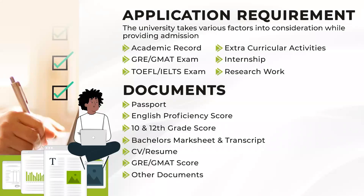For an MBA program, certain universities have an accelerated option with a duration of one year, which cuts down living expense, though tuition fees mostly remain the same. Most MBA programs are two years. Freshers are also accepted for MBA in many universities. One major point is that GMAT has been waived off due to the pandemic in most universities, making this the right time to put in your application. You can request transcripts from your university and apply.